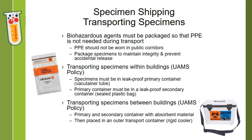When shipping or transporting biohazardous agents — also called infectious substances — these must be packaged so that PPE is not required during transport. PPE shouldn't be worn in public corridors in your facility. Make sure you're not carrying blood tubes across campus with your gloves on. These packages must also be packed in a way that will maintain the integrity of the specimen and prevent accidental release — you don't want the specimen to be accidentally dropped and the tube pops open with blood everywhere.